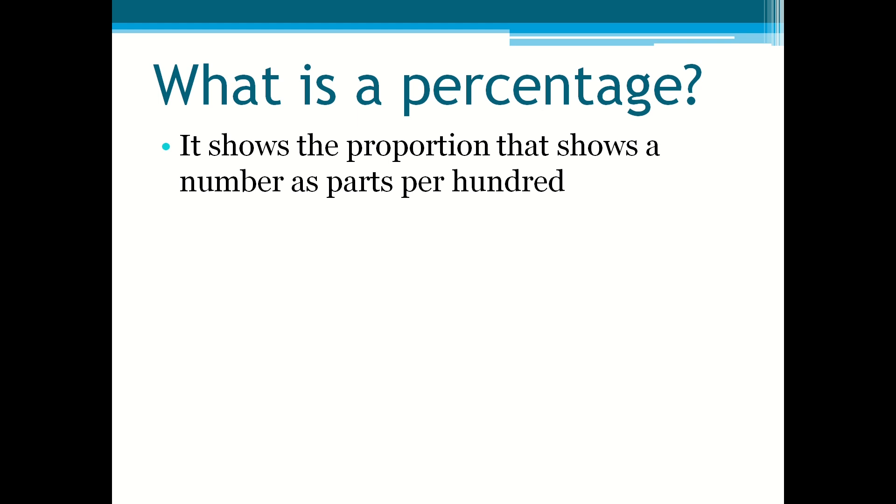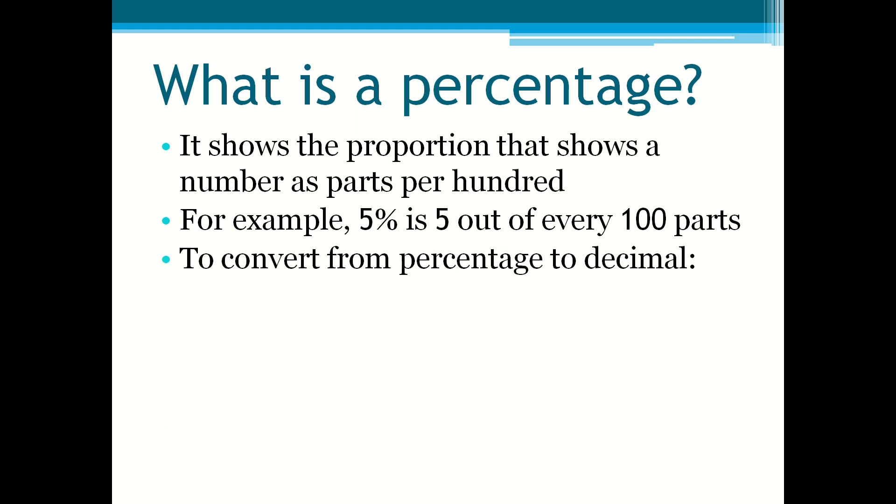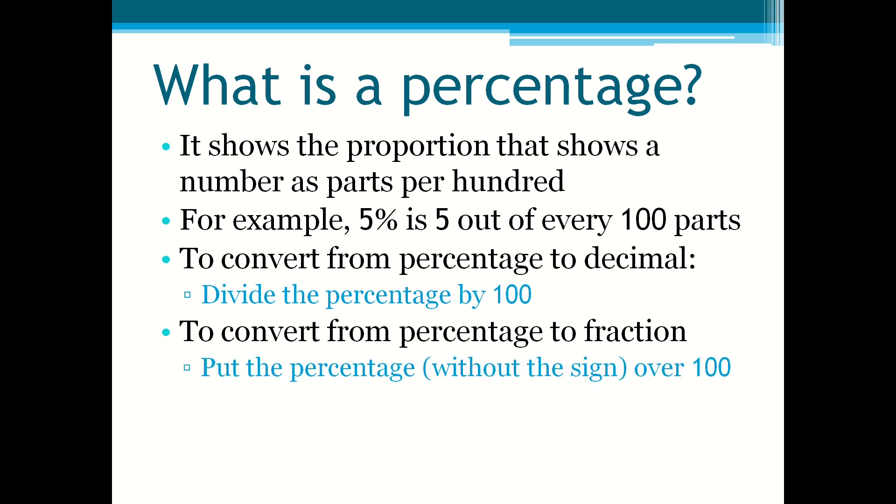For example, 5% is 5 out of every hundred parts. To convert from percentages to decimals, you divide the percentage by 100, and to convert from percentage to fraction, you put the percentage without the sign over 100 and then afterwards you can simplify.